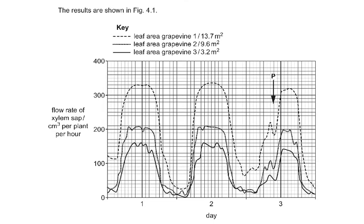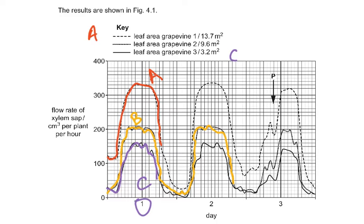Now reading graphs — remember how you read graphs. That's something I want to teach you. So leaf area of grapevine A would be this one, B would be this one, and C would be the third. You can see they have the same peaks and troughs. This is day one, day two, and day three — it's the day and night story which you have to understand, and that is very relevant to the present syllabus.